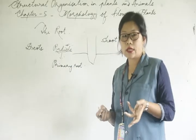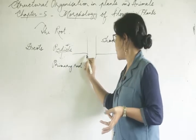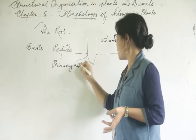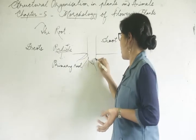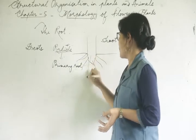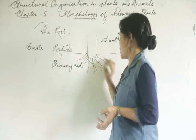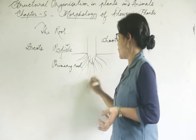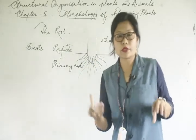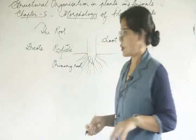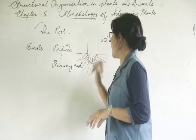In monocots, some fibrous-like structures will be formed from the primary roots. After the formation of a numerous number of roots, the primary root will degenerate.